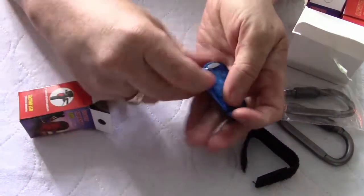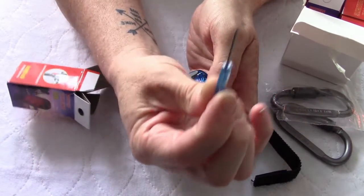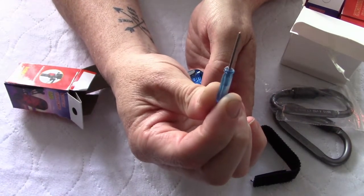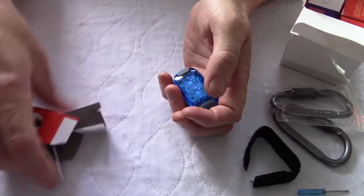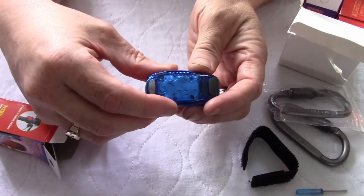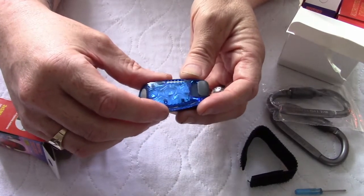Also included is a micro screwdriver so when the batteries run out you can replace the batteries. They are watch style batteries that are inside. I'm told that if you have the light on a stable pattern the battery life is about 50 hours.